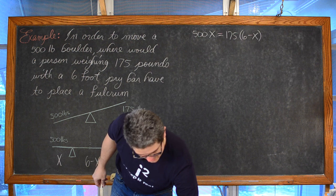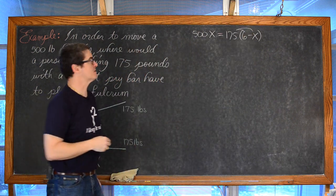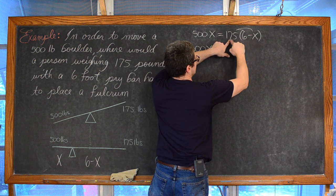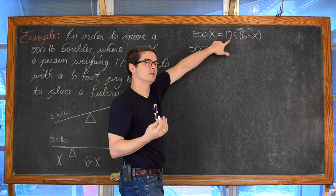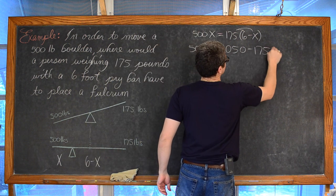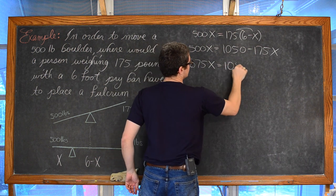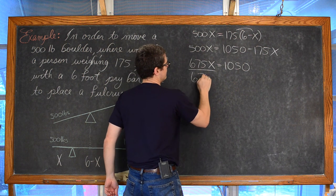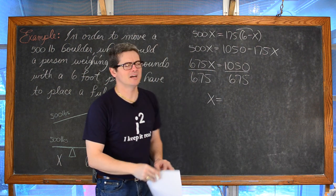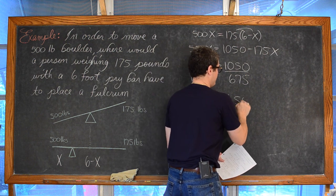We need to solve for x. We're going to distribute the 175 through the parenthesis, and we have 500x is equal to 1,050 minus 175x. Adding 175x to the left-hand side, we get 675x is equal to 1,050, and we divide both sides by 675, and we get x is approximately 1.556 feet.